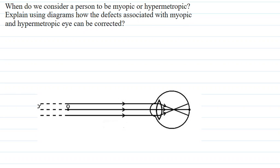The question says, when do we consider a person to be myopic or hypermetropic? Explain using diagrams how the defect associated with myopic and hypermetropic eye can be corrected. We will tell you about diagrams and how this myopic or hypermetropic eye can be corrected. Let us see the answer.